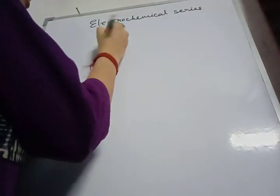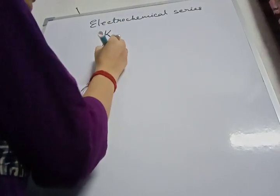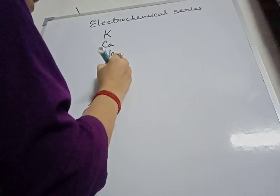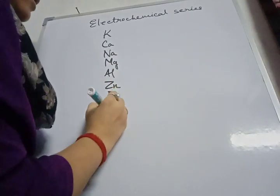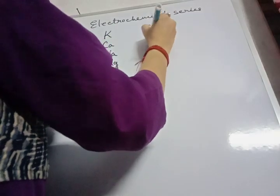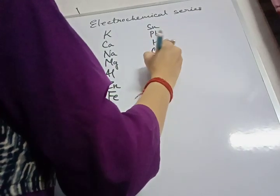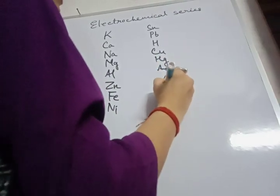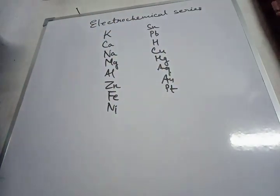The electrochemical series lists: potassium, calcium, sodium, magnesium, aluminium, zinc, iron, nickel, tin, lead, hydrogen (H), copper, mercury, silver, gold, and platinum. This is the electrochemical series of the metals.